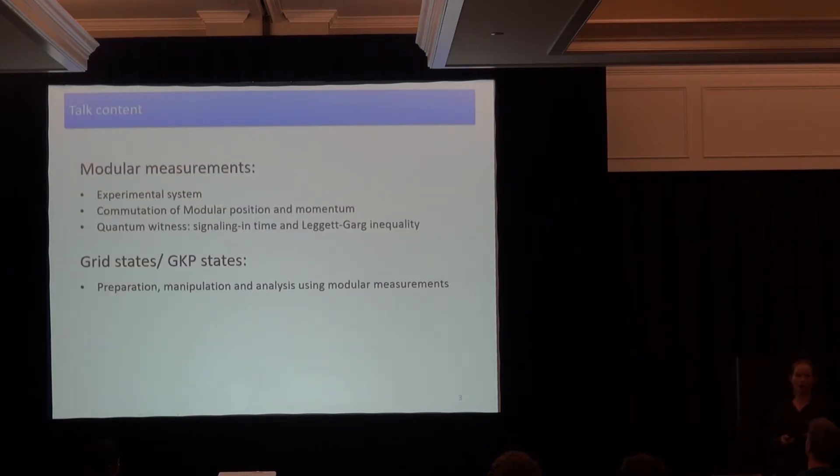So first I'm going to explain how, really only the basics about how I implement these modular measurements and especially sequences of them. Then we will experimentally explore how we can see whether this momentum and position can actually commute. And then I will quickly explore a third topic since I have a mechanical oscillator. So this is the system with the most natural crossover to classical physics. So I will also address how we can use this measurement to explore this quantum to classical transition. And then in the second part we will use whatever we learned here to get to some approximate grid states.